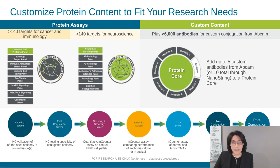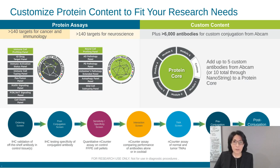GeoMx protein panels offer great flexibility in the biology and number of targets you can interrogate. You can measure over 140 protein targets relevant in cancer and immunology research, with content partitioned into functional modules so you can pick and choose what is relevant for your experiment. There are also over 100 protein targets relevant in neuroscience research, also partitioned into functional modules. Through a partnership with Abcam, you have access to over 6,000 antibodies that can be included as custom content, with defined best practices to ensure high-quality results from customized content.